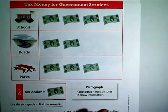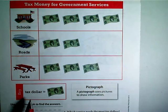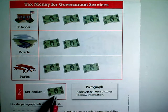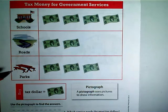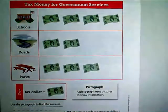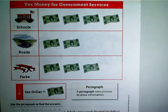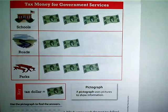Now I'm going to turn it over and look at page 40. So page 40, we're looking here at a pictograph, and we've talked about this a little bit in math class. A pictograph uses pictures to show information. When we look here at our key, it says tax dollar equals one of these pictures — it's a picture of a dollar bill. So when we look up at the chart, tax money for government services — that's one of the things the government does, is provide services such as schools, roads, and parks. We're going to count to see how much money is given to each of those services. I like to count and then write how many we see for each of those services before I even look at the questions.